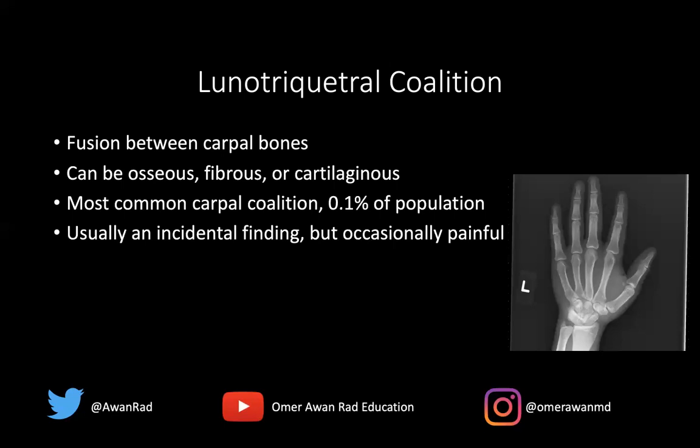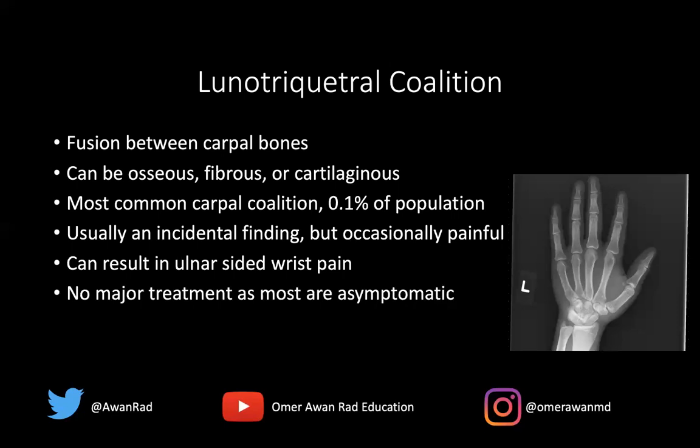This is usually an incidental finding — people come in for other reasons like trauma or to rule out a fracture. However, it can occasionally be painful and can present with ulnar-sided wrist pain. It's important to assess this because you are effectively obliterating the lunotriquetral ligament, which can cause problems with mobility and pain. Most are asymptomatic and there is no major treatment, but it is important to mention this in your report, as it can be a cause of ulnar-sided wrist pain.